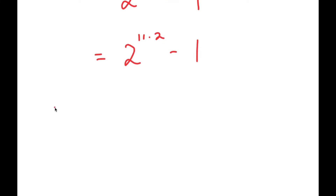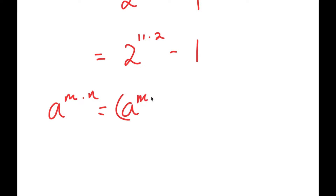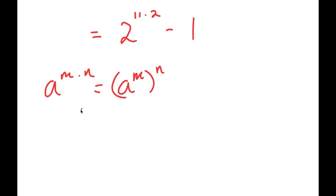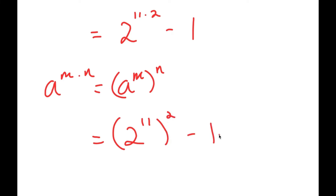Now, if I have something in the form a to the power of m times n, this is equal to a to the power of m to the power of n. So, 2 to the power of 11 times 2 is equal to 2 to the power of 11, to the power of 2, minus 1.